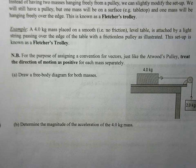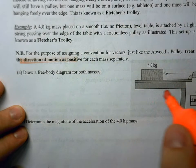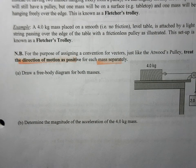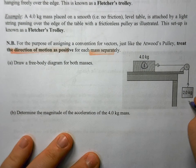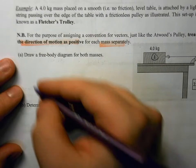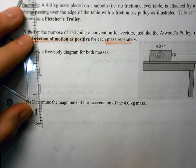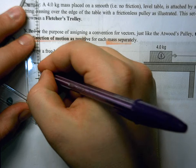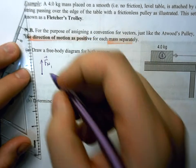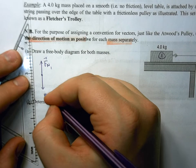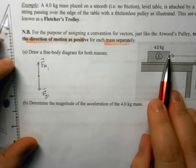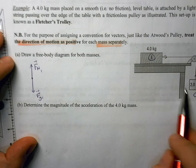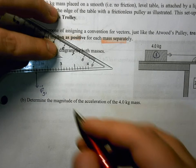Just like with the Atwood's pulley, because we're going to be looking at the two masses individually, you're going to treat the direction of motion as positive for each mass separately — and this is really important. So we're going to draw a free body diagram for both masses. This first mass on the table I'll call mass 1, and this hanging mass I'll call mass 2. For mass 1, it's sitting on a tabletop and not moving vertically, so it has a normal force acting up, a force of gravity acting down, and a force of tension in the string pulling on it.